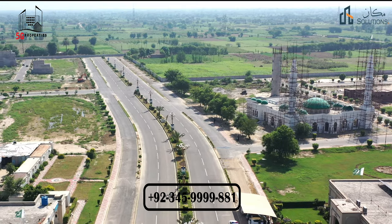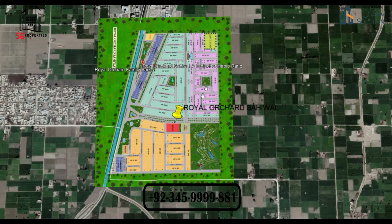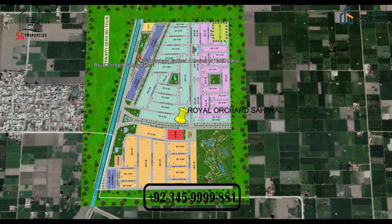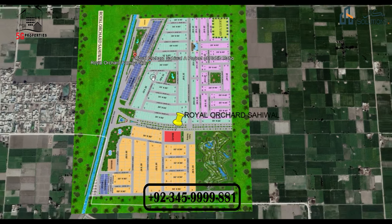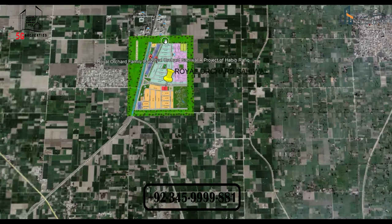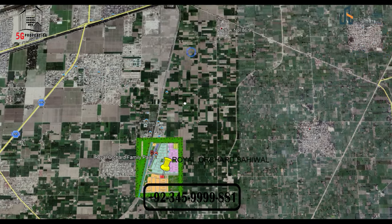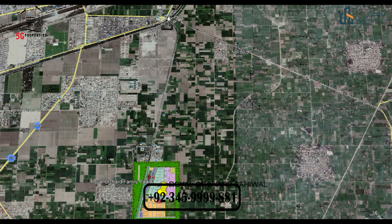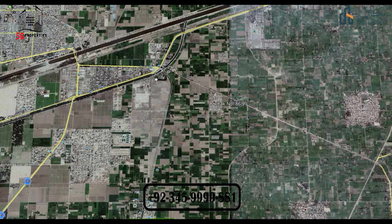The first thing is the location of Royal Orchard Sahiwal. At this time we can see the site map of Royal Orchard Sahiwal. The total number of plots is very small — this is not a big society, this is a small society. The main location is on NH5, National Highway 5, Grand Trunk Road, GT Road.